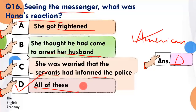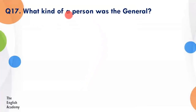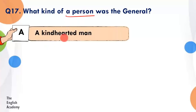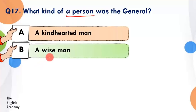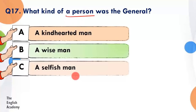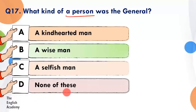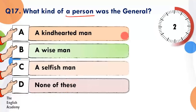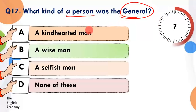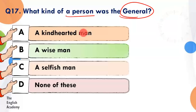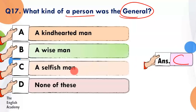Question number 17: What kind of person was the general? Option A: a kind-hearted man. Option B: a wise man. Option C: a selfish man. Option D: none of these. The answer is Option C — he is a selfish man.